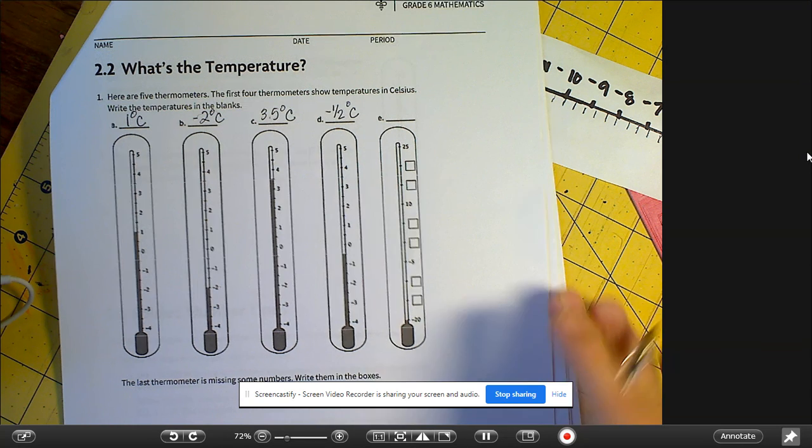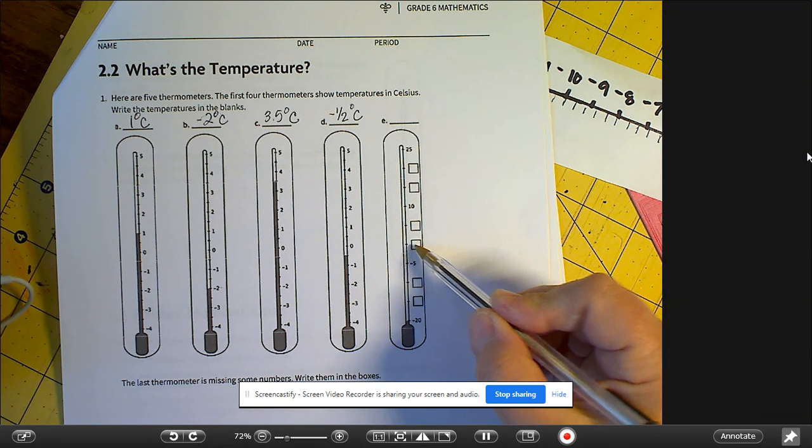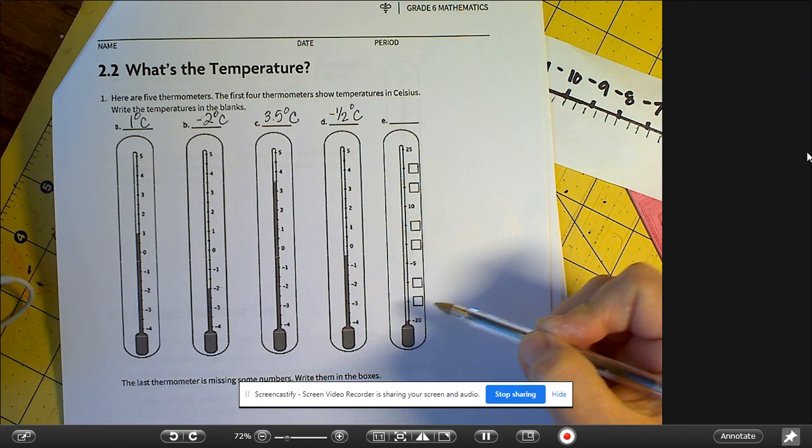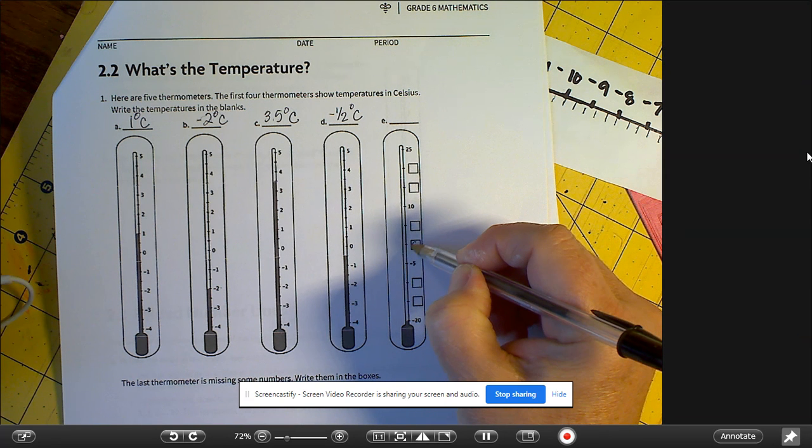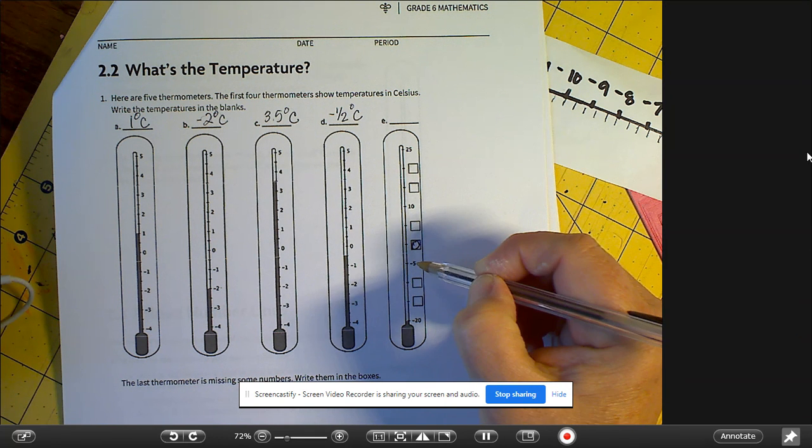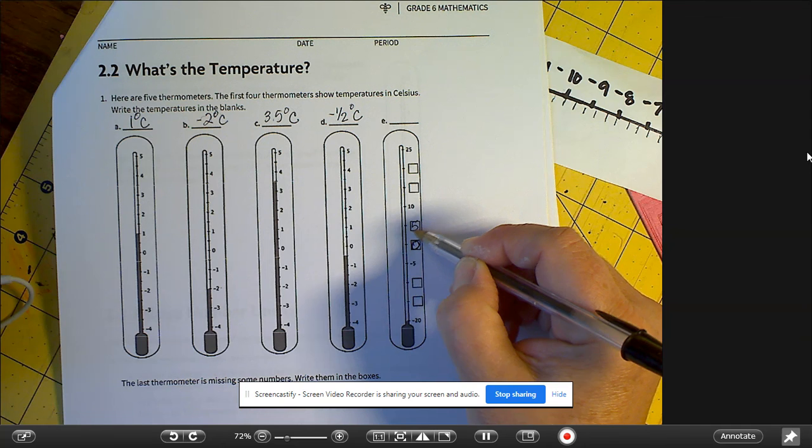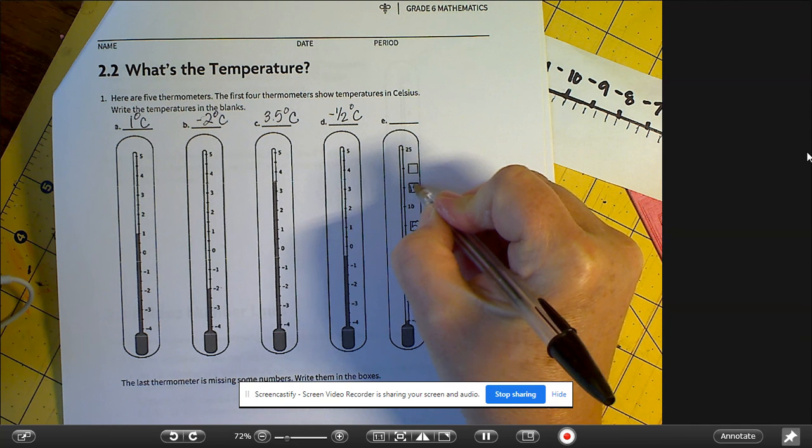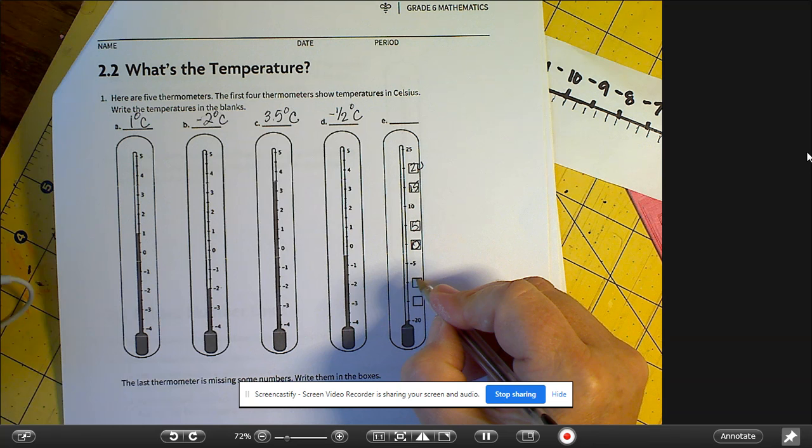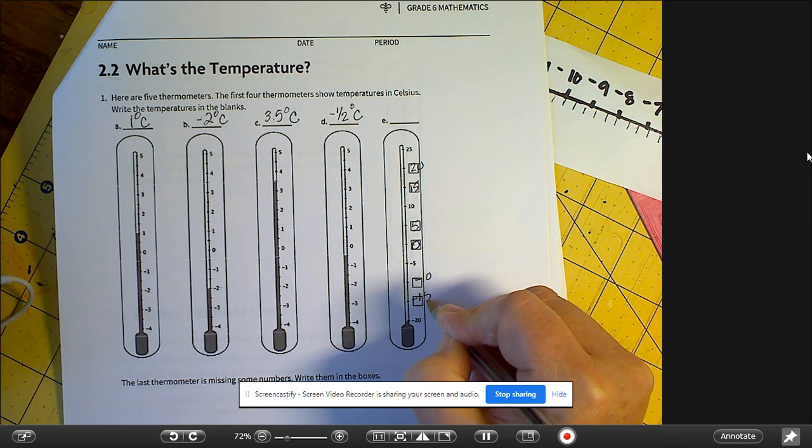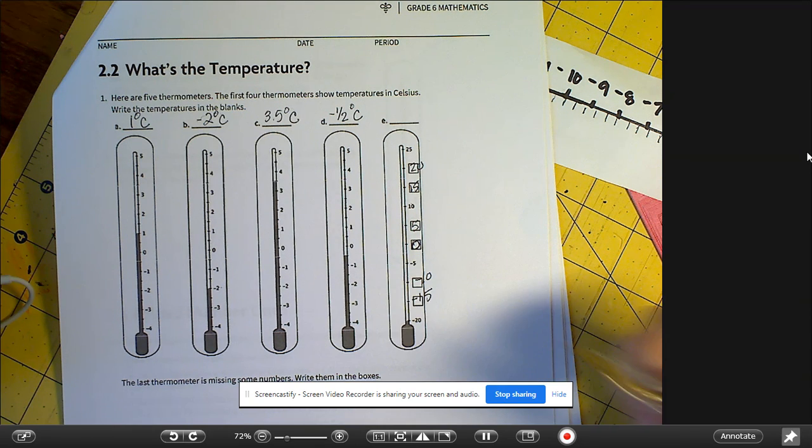And for the last box, they want us to fill it in. So it looks like they're counting by five, so going here would be zero. And going up, we'd have 5, 10, 15, 20. And going down this way, it would be negative 5, negative 10, negative 15, negative 20.